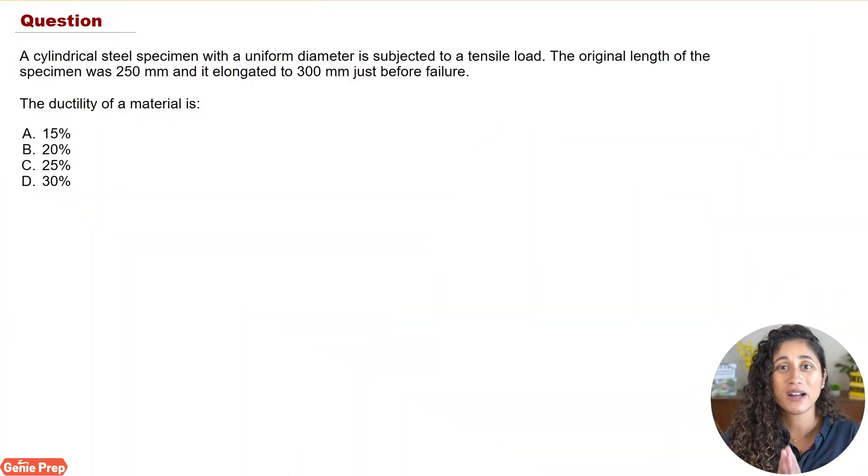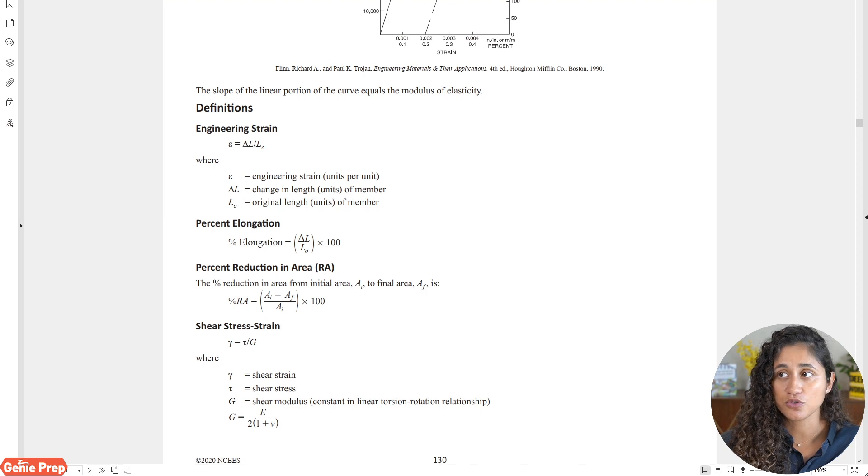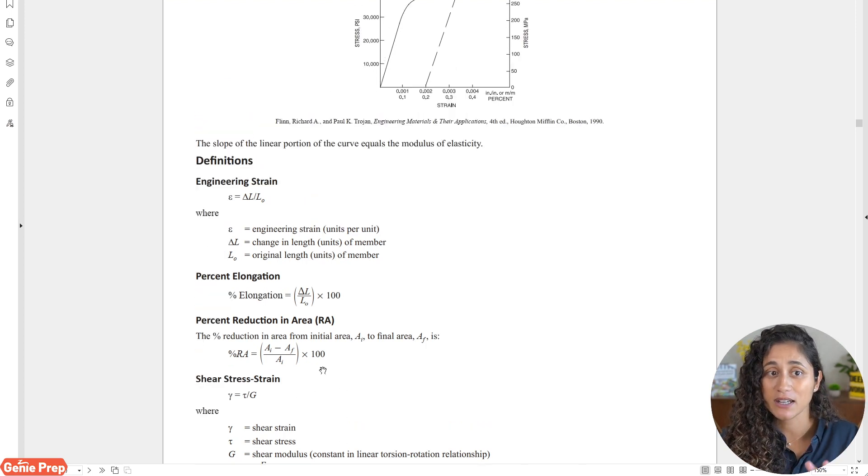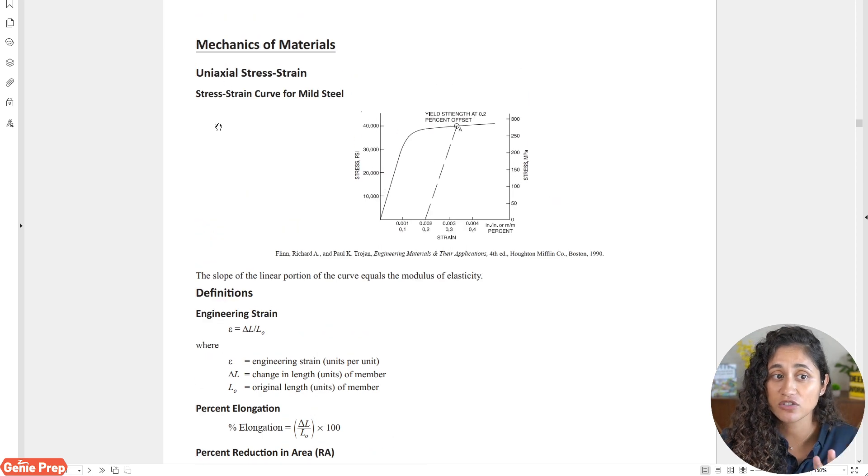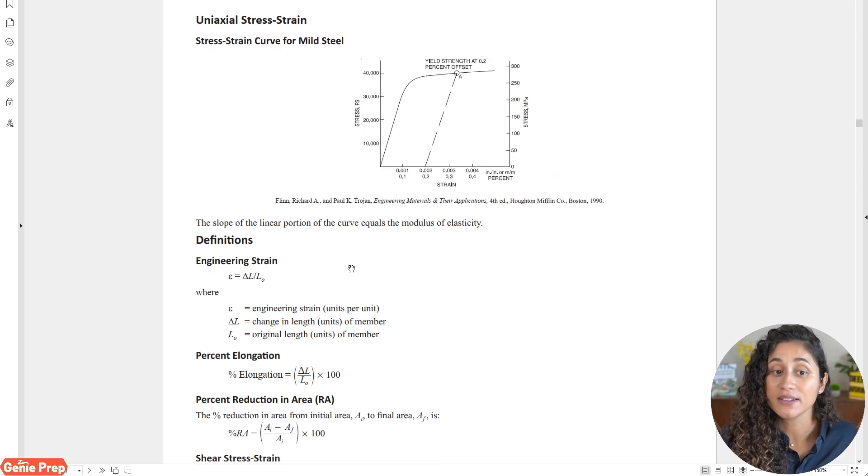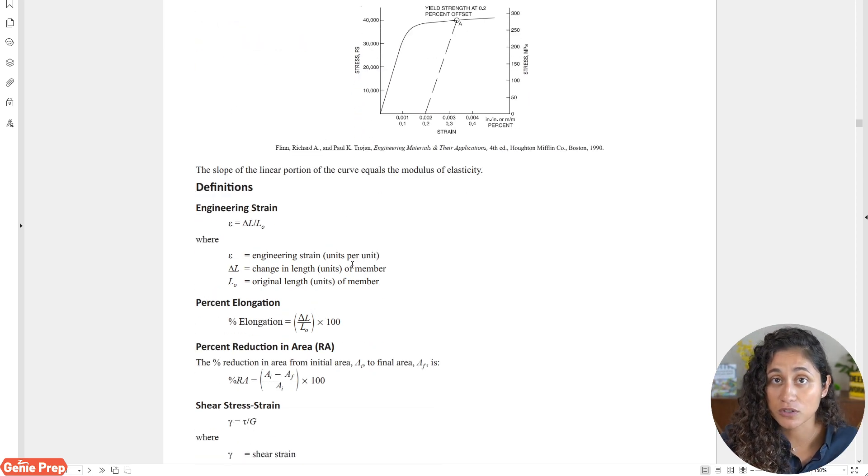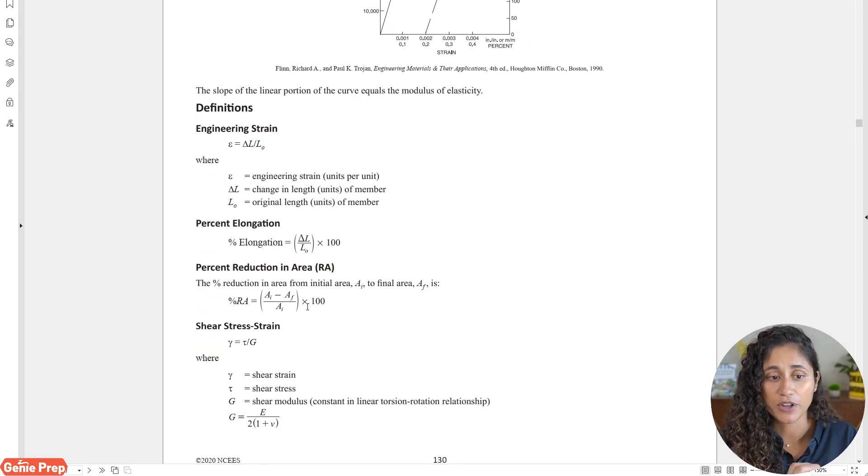As I mentioned before, to find the ductility of a material, we can either calculate the percent elongation or the percent reduction in area. Now, if we go to the reference manual, here we are giving those equations. Keep in mind, guys, these equations are under mechanics of materials, although this question is a materials question. So remember, they're here.